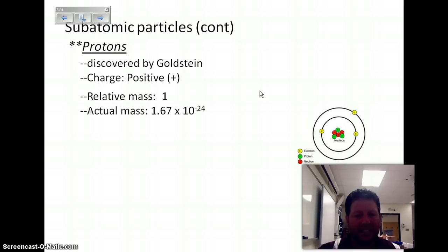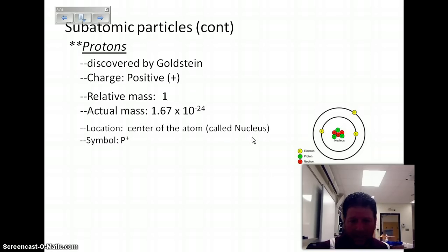They have a relative mass of about one, one AMU, and their actual mass is 1.67 times 10 to the negative 24. So, relative mass of electron is zero, relative mass of a proton is one. The location of the proton is in the nucleus, or the center of the atom. And the symbol is P positive.